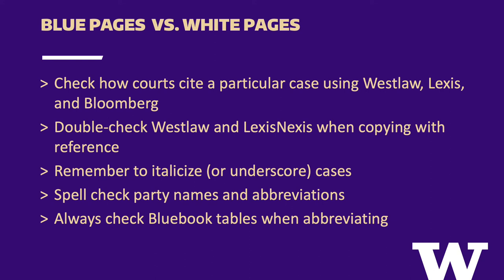When you do get the proper citation format down, make sure to italicize your cases. When doing so, ensure that you only italicize the case name and not the subsequent punctuation. Improperly italicizing a comma after a case name is an easy way to not only lose points on a graded assignment, but also a sure way to demonstrate to your reader a lack of attention to detail. Finally, always spell check and verify your use of accurate abbreviations. It is easy once you get into a rhythm to assume you know how to properly abbreviate a word; however, it is important to always reference Tables 6 and 10.